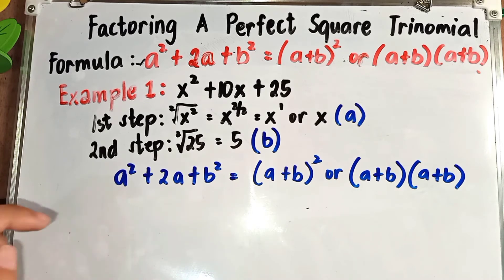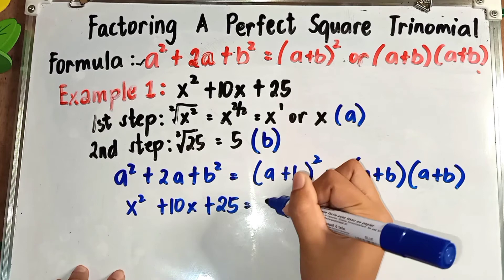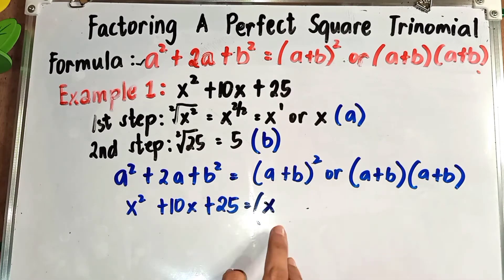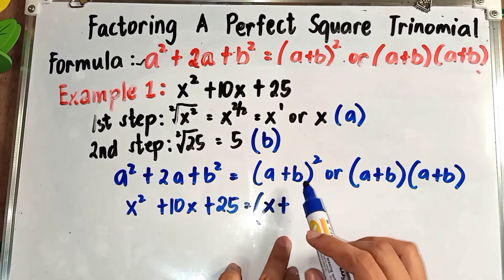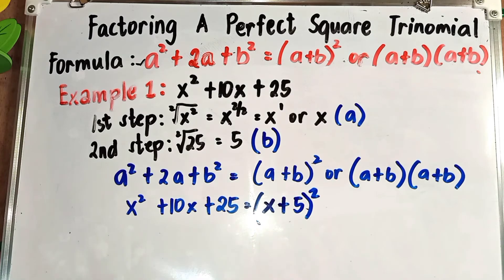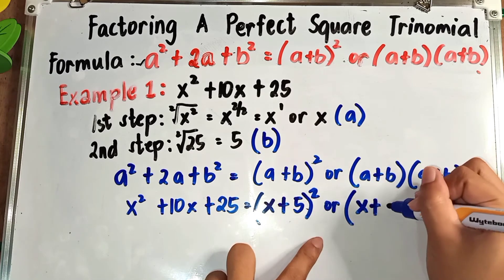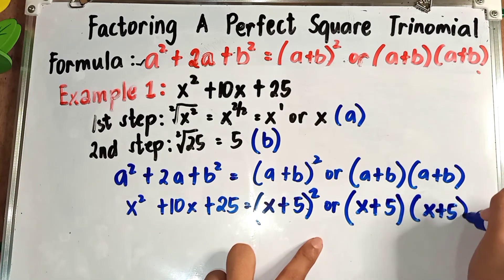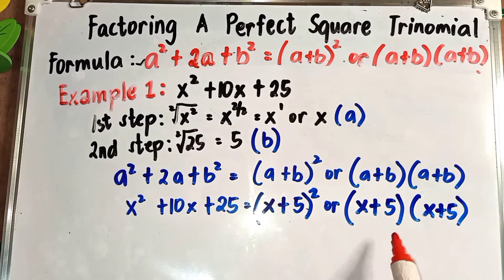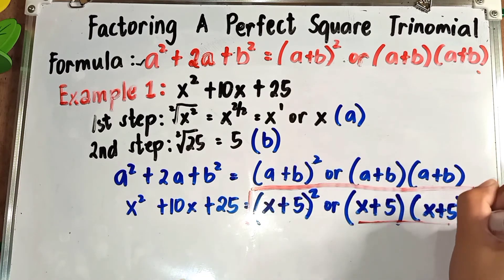Our given problem is x² + 10x + 25. Substituting: the value of a is x, the sign is plus, and the value of b is 5. So our final answer is (x + 5)² or (x + 5)(x + 5).